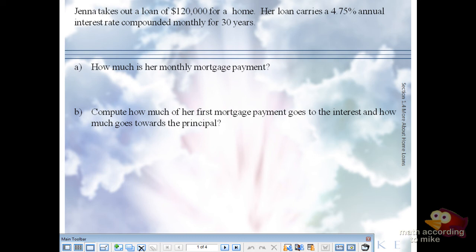Takes out a loan for $120,000. House carries a loan of 4.75% compounded monthly for 30 years.